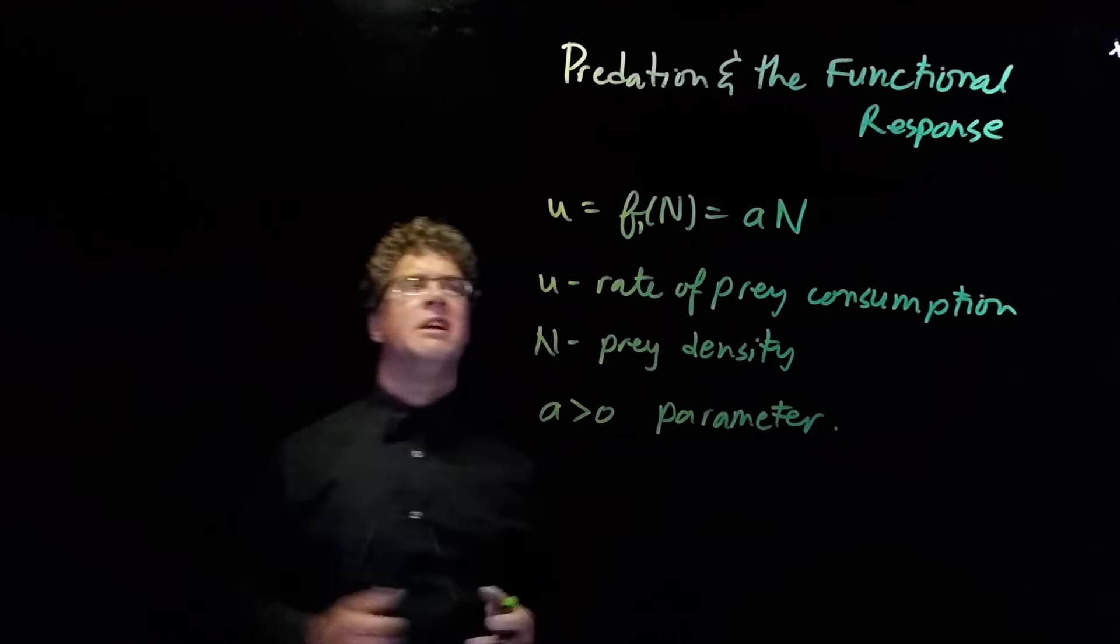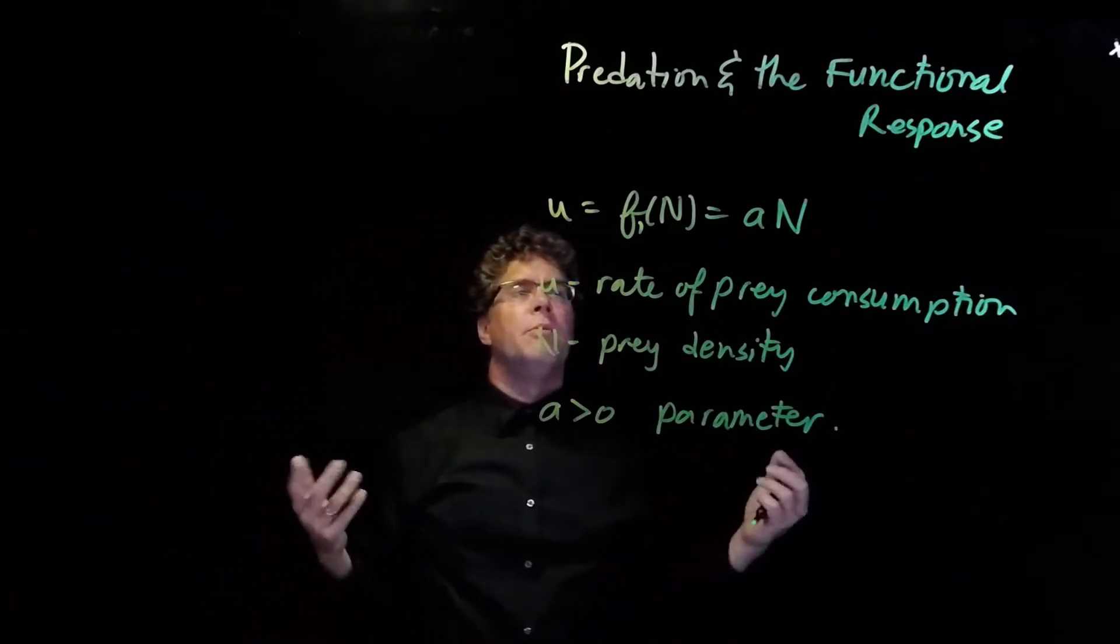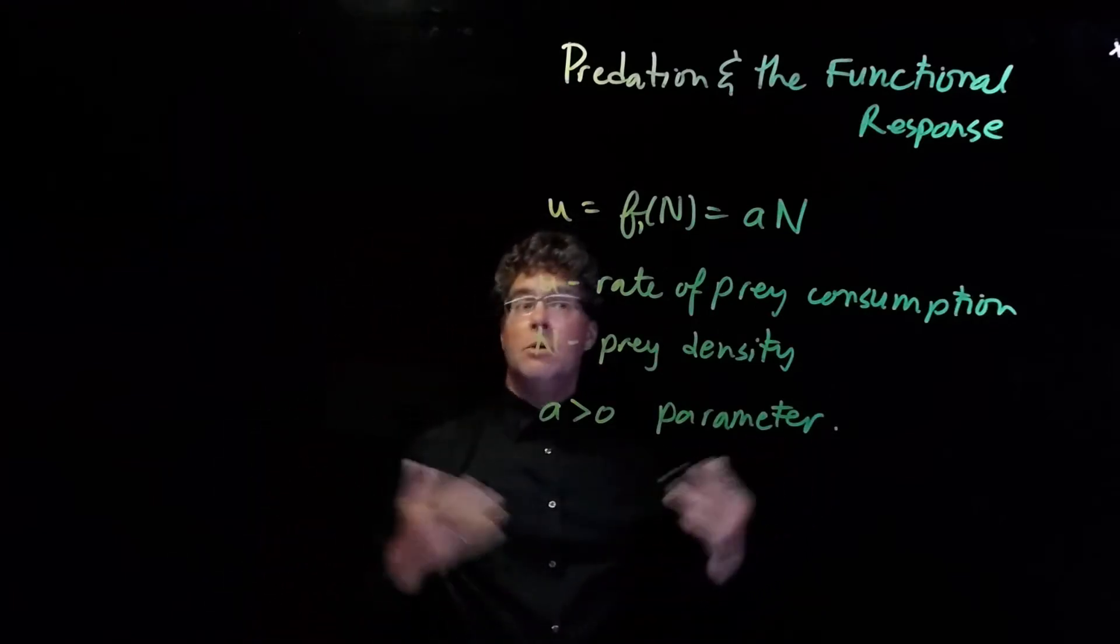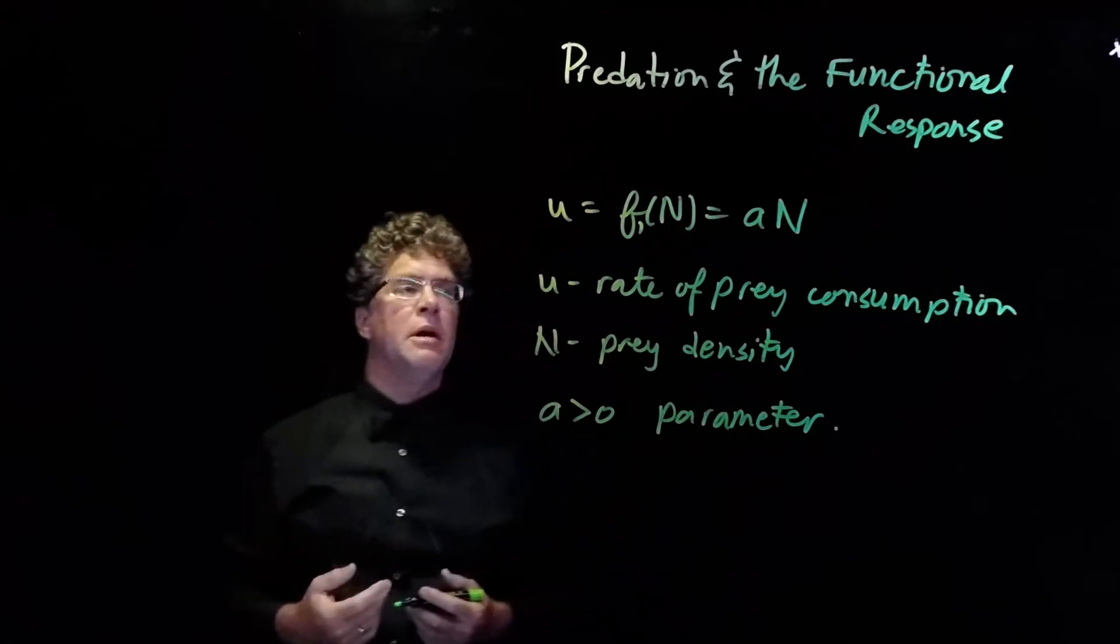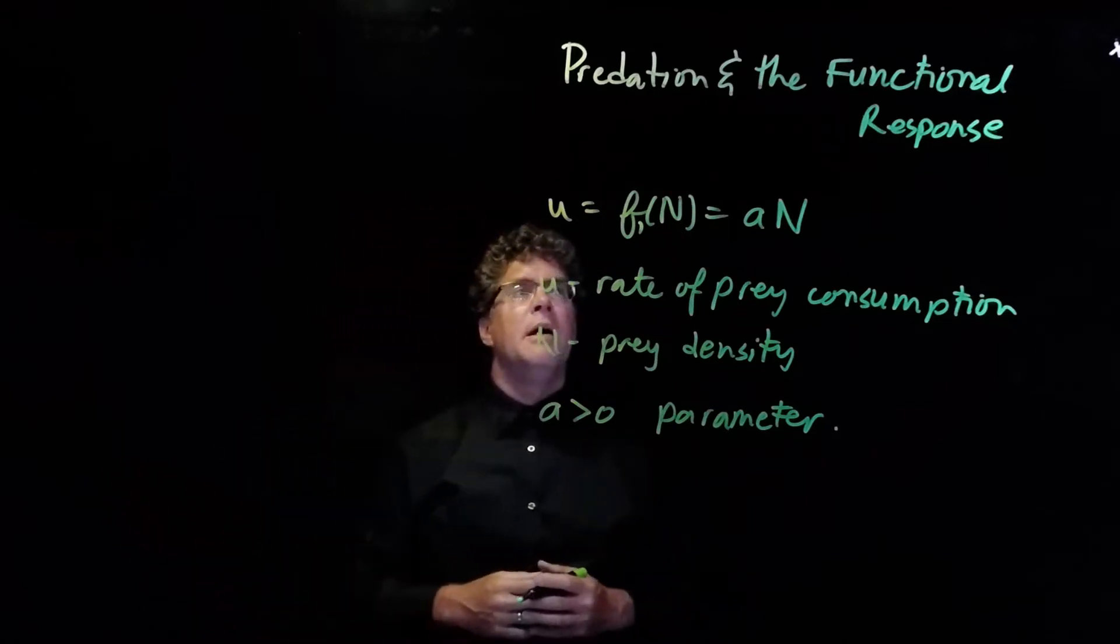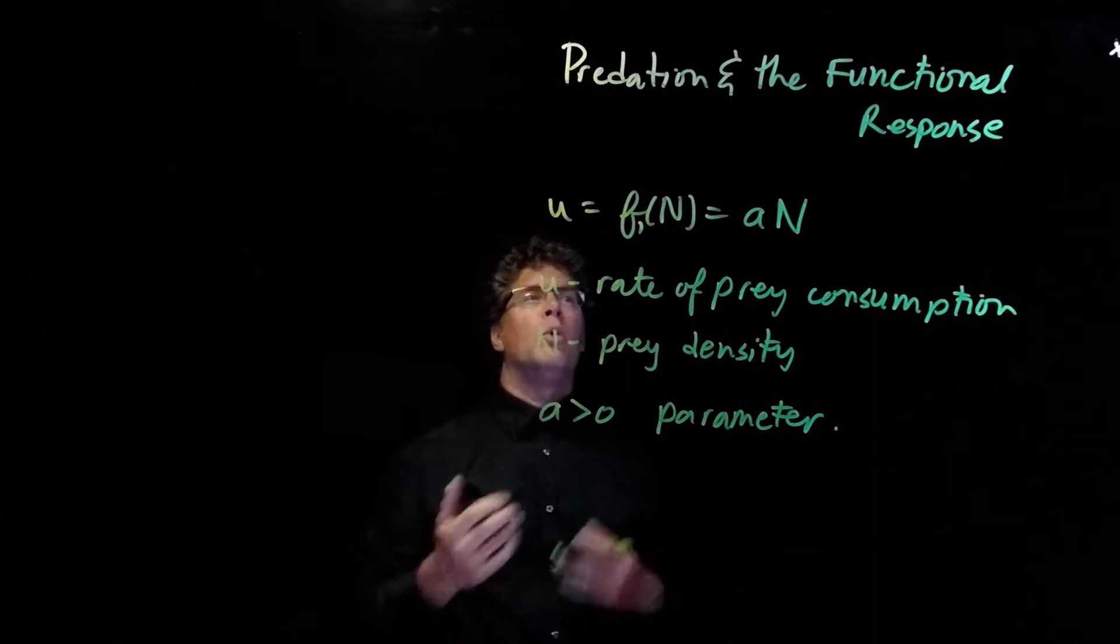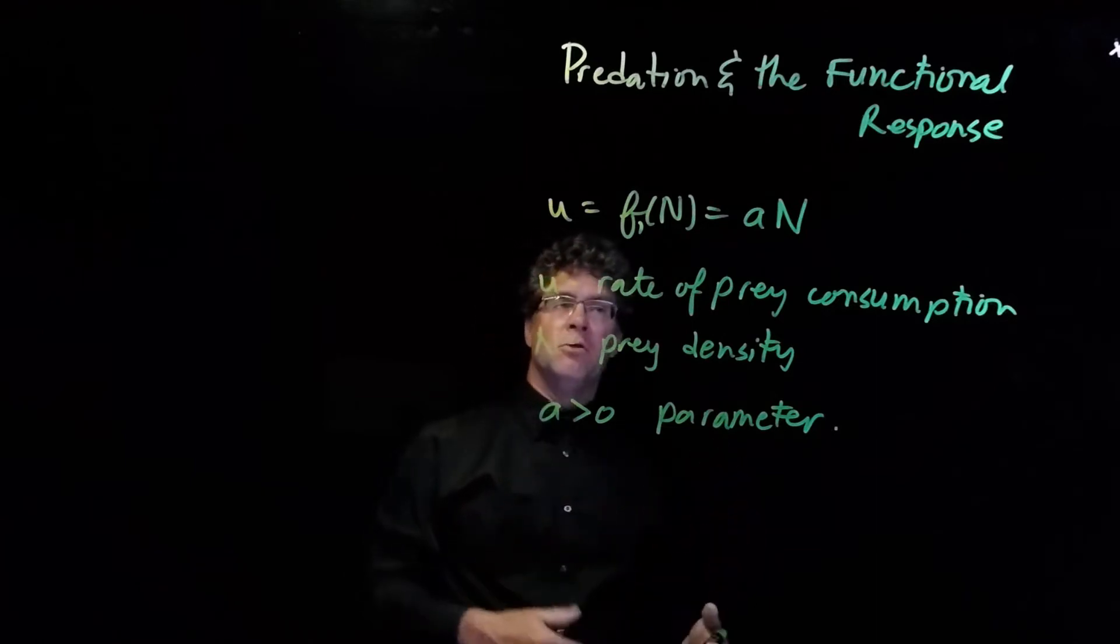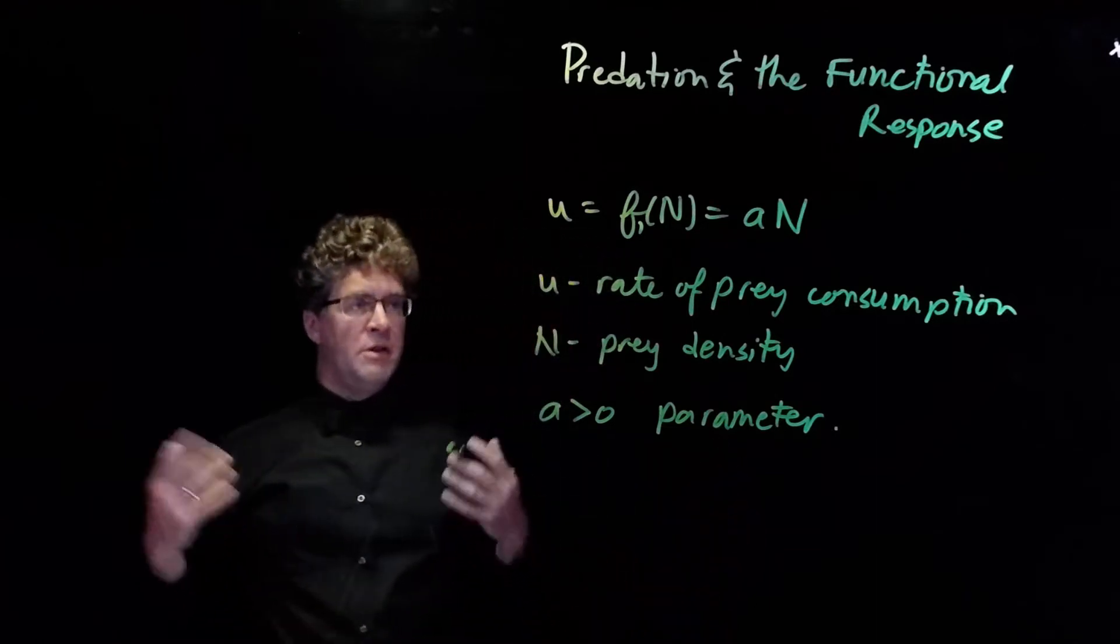It could be 1, it could be 3.75. When we think of the prey, think of maybe moose. The predator could be wolves. And we're interested in how quickly wolves would consume moose as a function of the density of moose.